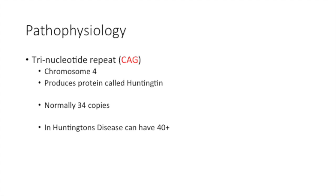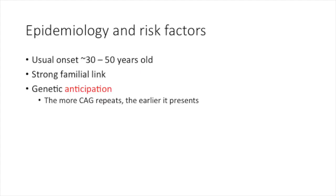One giant breakthrough in Huntington's disease research was the discovery of a trinucleotide repeat located on chromosome 4. On chromosome 4, there is a region where three nucleotides keep on getting repeated. These three nucleotides are C, A, and G — so I'll call them CAGs. A normal person has around about 34 copies of CAGs on chromosome 4, but in Huntington's patients, they seem to find more than 40 copies. The interesting thing found was that the more copies a patient had, the earlier the disease presented.